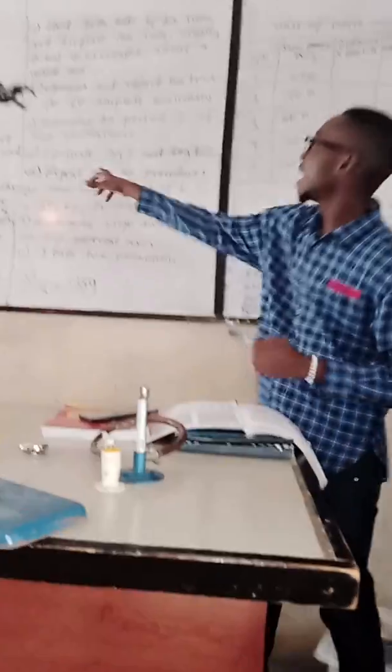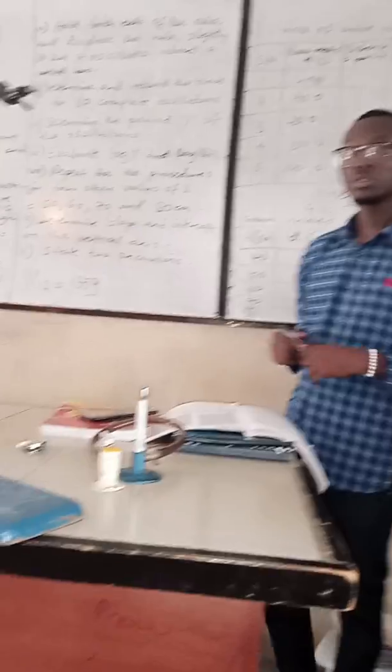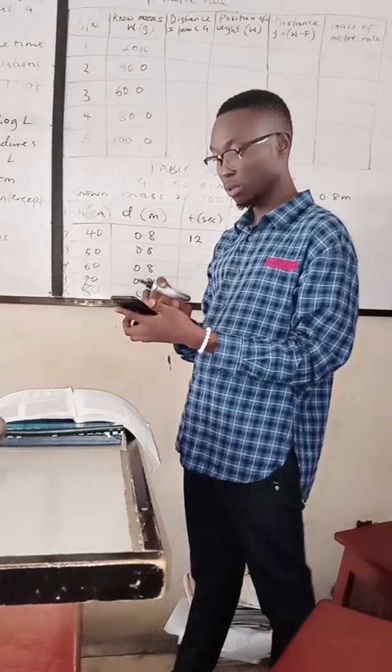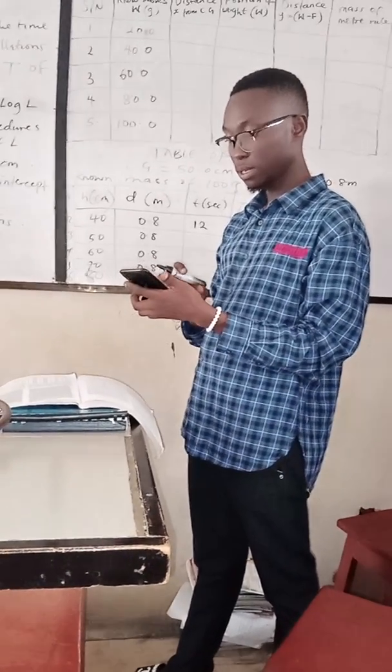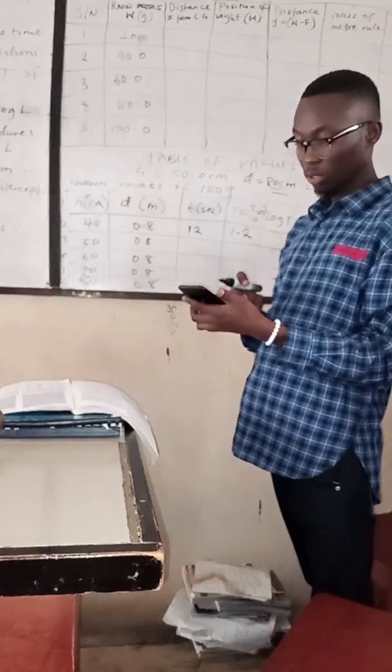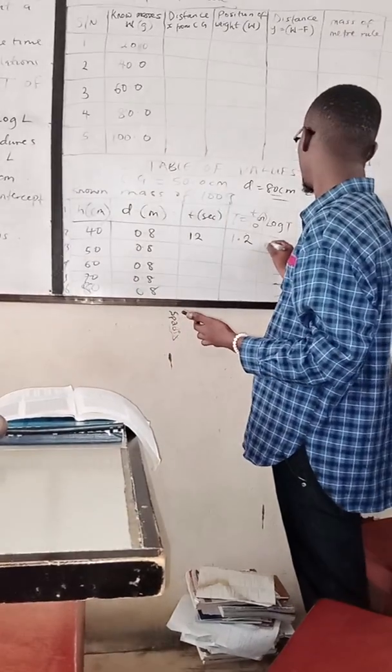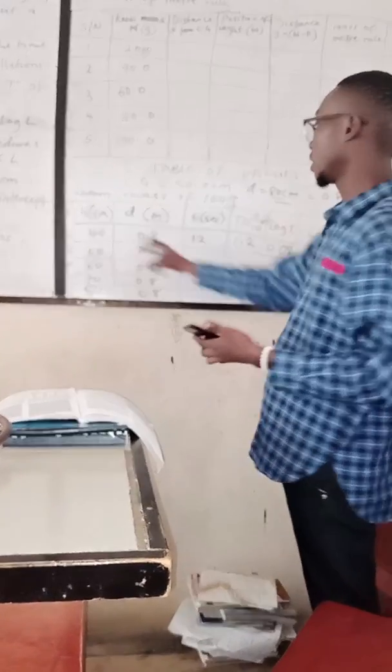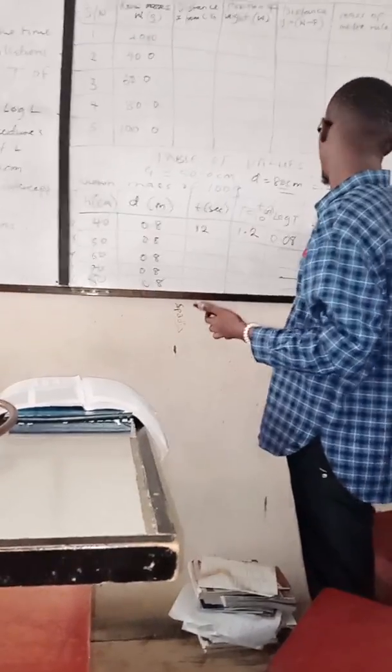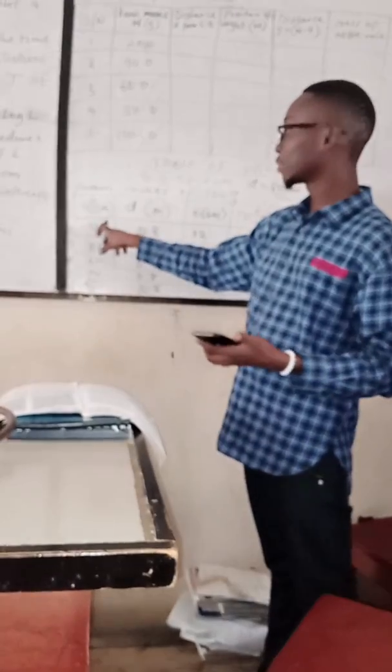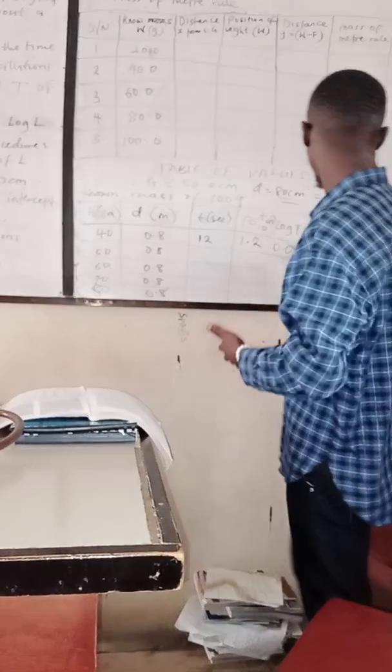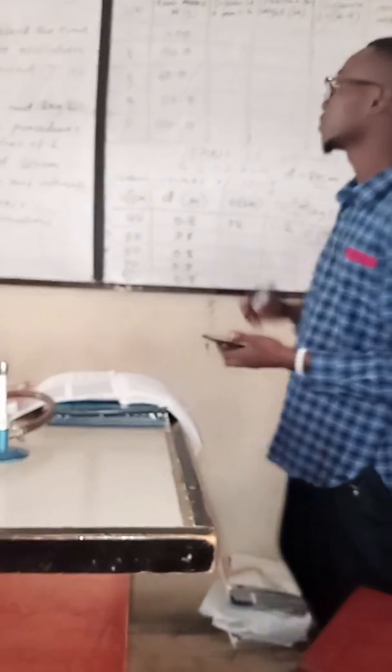Then they said evaluate log T and log h. Log T, T is 1.2, so log 1.2 is equal to 0.08. Then we should also evaluate log h. Log h, h is 40, so log 40 is equal to 1.60. So we have done that.